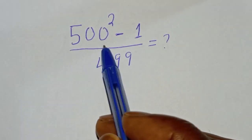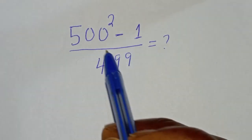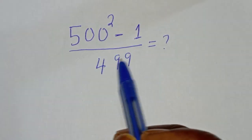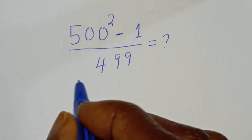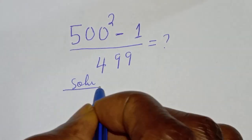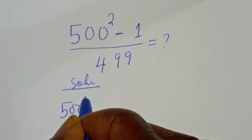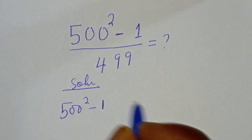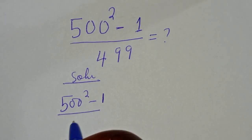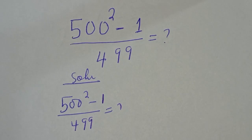Hello, welcome to MathFocus. In this class, we want to find the value of S from this given math problem. 500 squared minus 1 to the power of 499 — that is, 500 squared minus 1 divided by 499 — is equal to what?